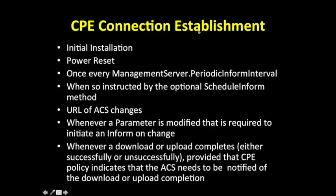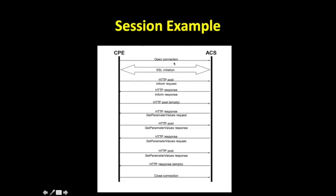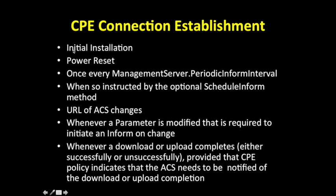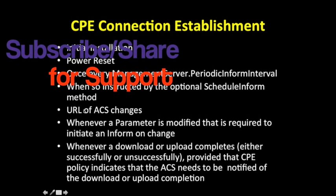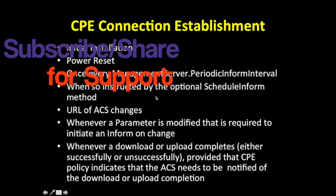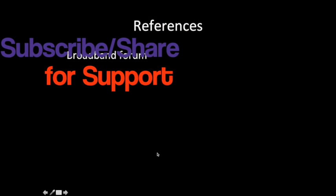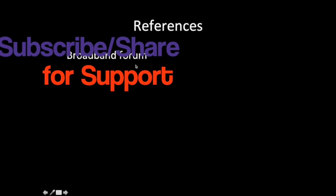CPE connection establishment occurs when the device is initially installed, powered on, or reset. It is also configurable, such as based on a periodic inform interval timeout, or when the ACS URL changes. There are many categories of events that trigger CPE connection establishment. For more references, you can always refer to the Broadband Forum.